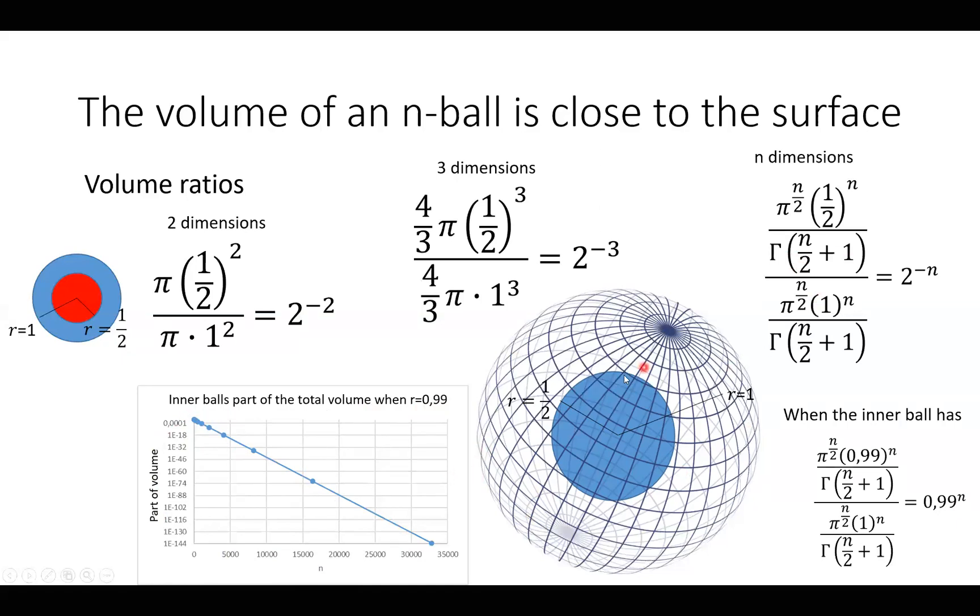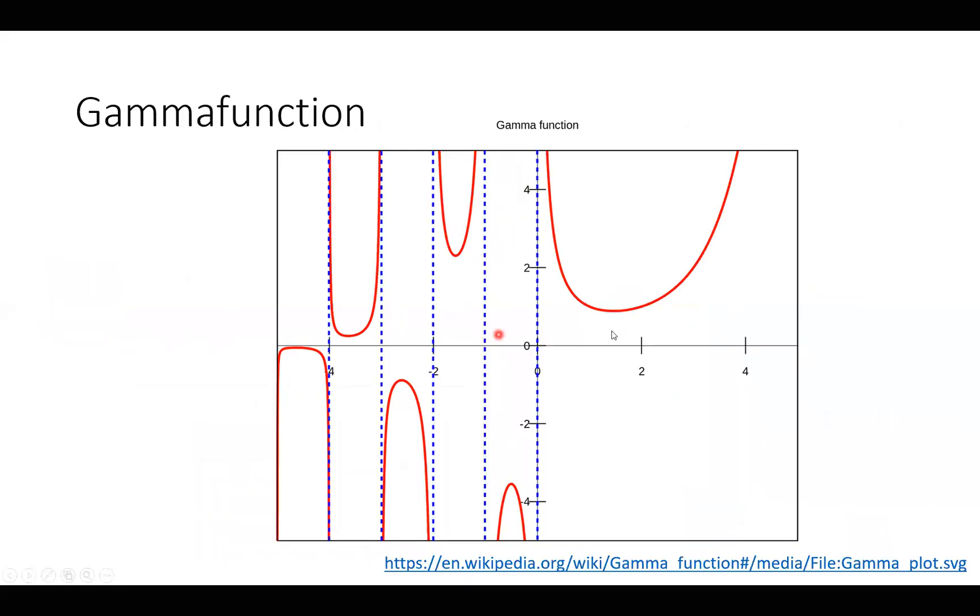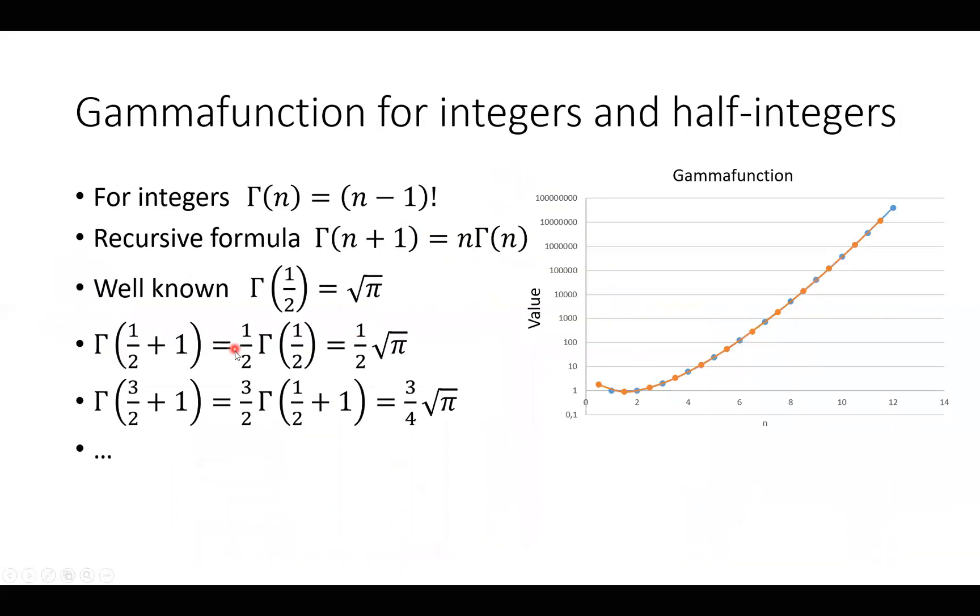So what is this? This is the gamma function. If you are not familiar with this, I will just show you a slide or two about the gamma function. Here you see how it looks. Here is the x axis, here is the y axis, and here is the gamma function. You see it goes like this here for positive values and here for negative values. For integers, the gamma function is defined as n minus 1 factorial.